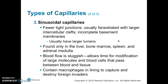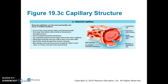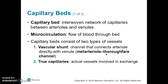The last type of capillary is the sinusoidal capillary. They have fewer tight junctions and are usually fenestrated with larger intercellular clefts, incomplete basement membranes, and larger lumens. Sinusoidal capillaries are found only in the liver, bone marrow, spleen, and adrenal medulla. Blood flow is sluggish, allowing modification of large molecules and blood cells. These capillaries contain macrophages in their lining to capture and destroy foreign invaders. Here is a picture of a sinusoidal capillary showing the larger lumen, lots of fenestrations, few tight junctions, and macrophages.